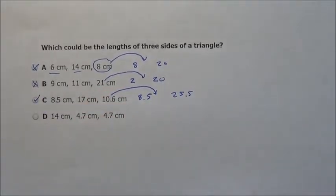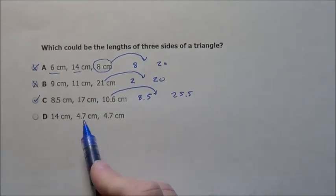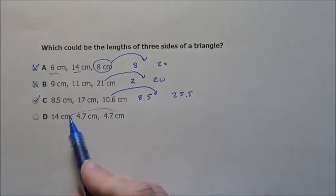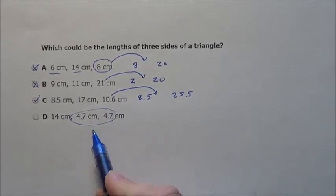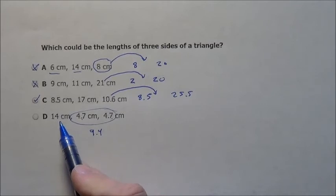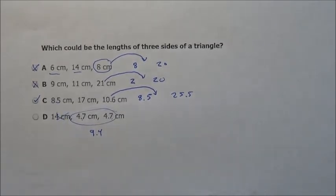Choice C is going to be the one that works for us. I can see D is not going to work right away—4.7 and 4.7 added together gives a maximum of 9.4, which is less than 14. So D is out of the question. The answer here is choice C.